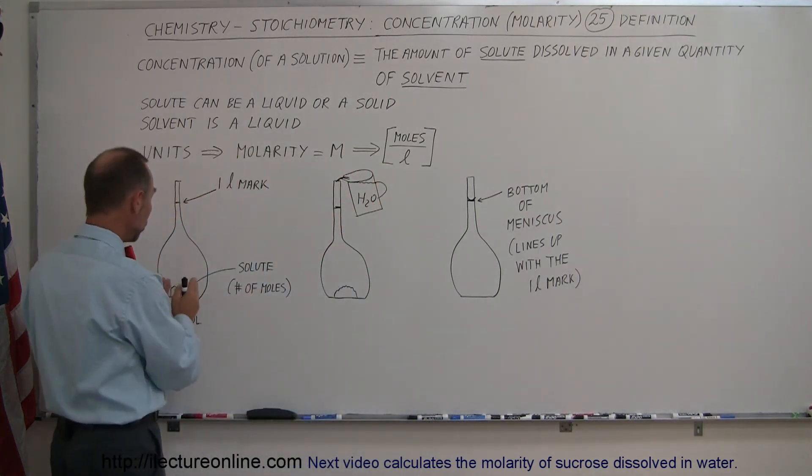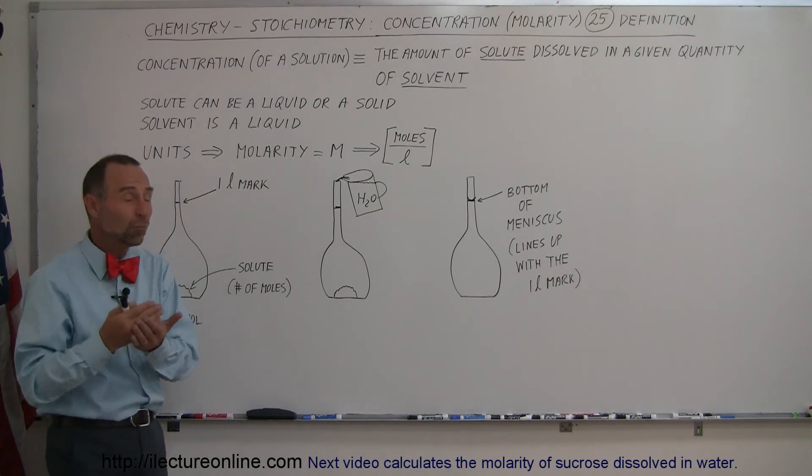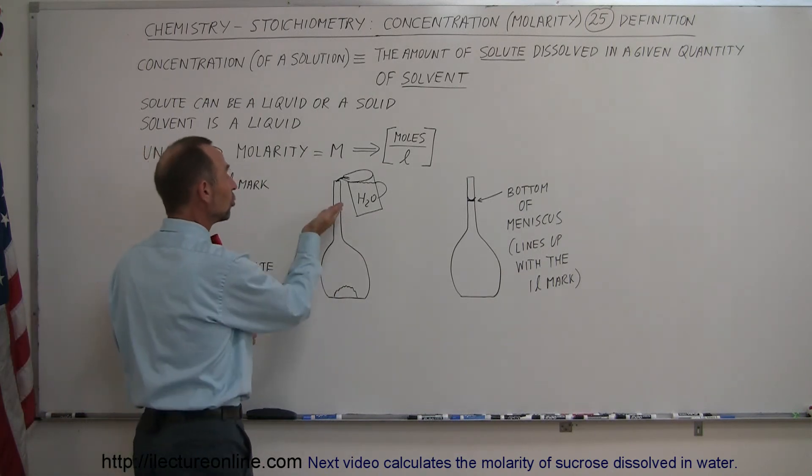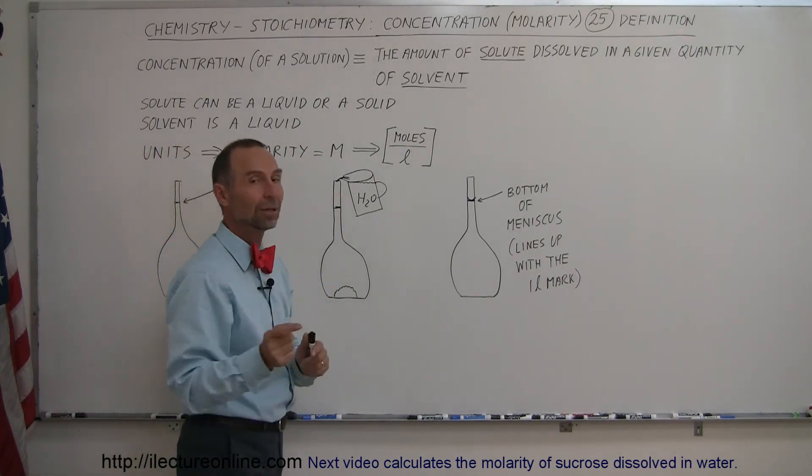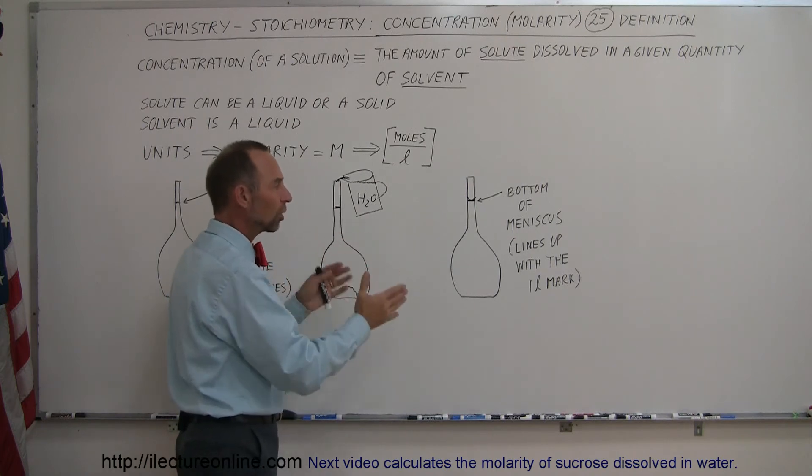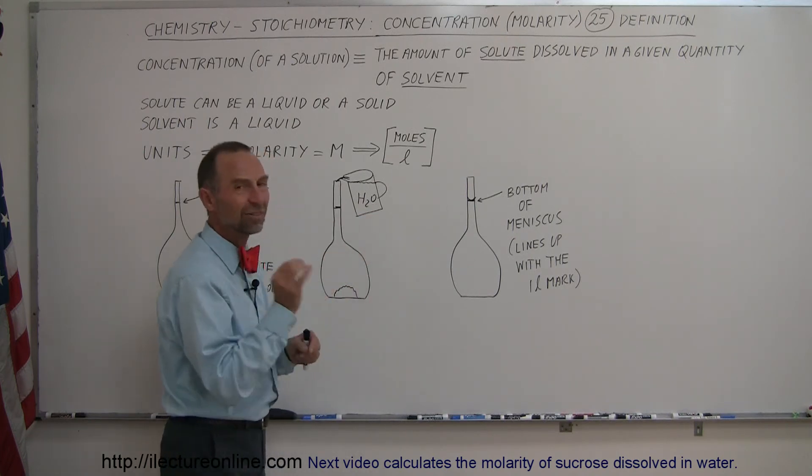And now we have a known quantity of the solute, the known number of moles, and we know that the solution is now a total of one liter. That means the solvent and the solute together make up a volume of exactly one liter.